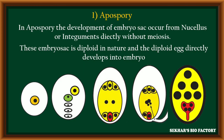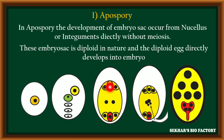In apospory, the development of the embryo sac directly takes place from either nucellus cells or integument cells. The megaspore mother cell undergoes meiosis division to form haploid megaspores, but the embryo sac is developed from either nucellus cells or integuments. The entire embryo sac is diploid in nature. In this embryo sac, the egg cell is diploid and can become a diploid embryo directly without fertilization. Being diploid in nature is the special character of apospory.